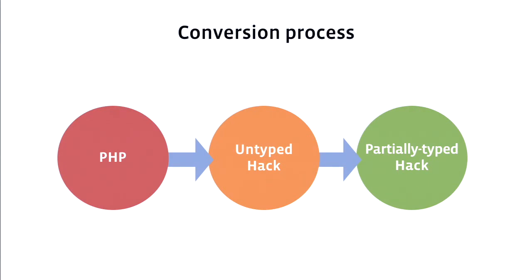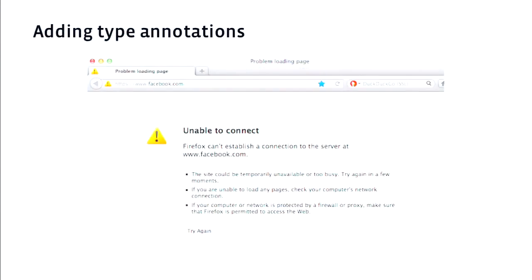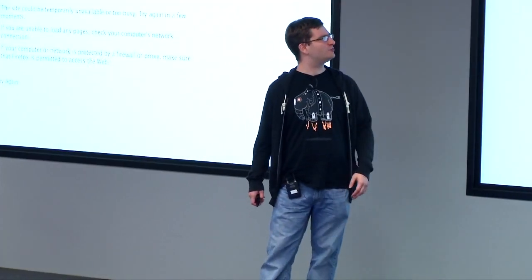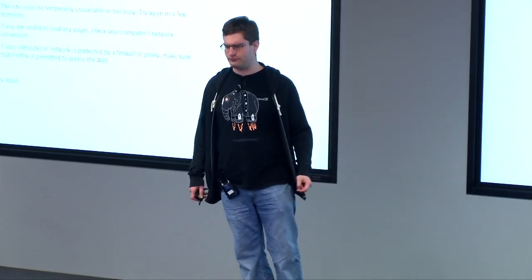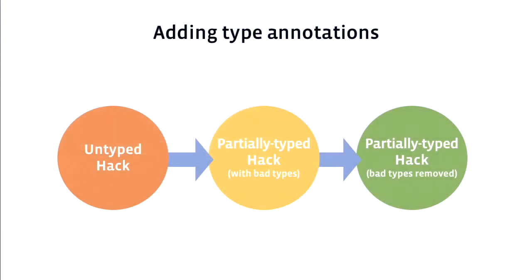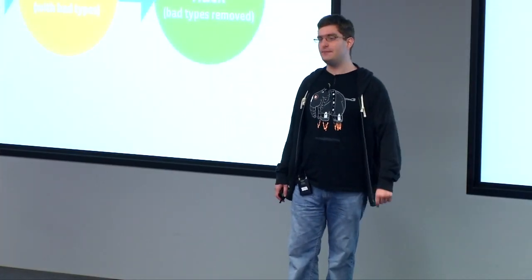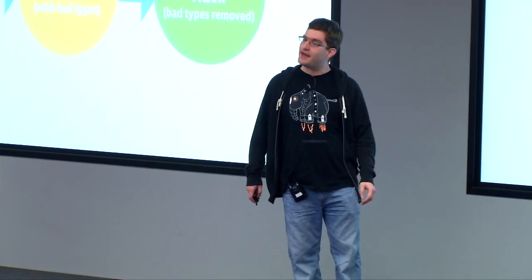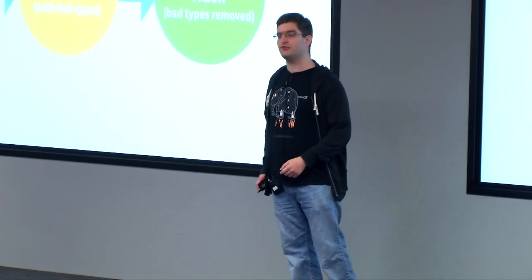More importantly, when we're inferring and adding type annotations, how do we do it without taking down the site? A type mismatch in PHP and in Hack is an irrecoverable error by default — it will stop your request. So how do you add these when they might potentially be incorrect without breaking things? Here's the solution: you do it in two steps. First, add a bunch of types that might be wrong, but do it in such a way that instead of failing at runtime with a hard failure, they give you a warning message you can print into your production logs. Then read your production logs and remove the types that are actually failing at runtime.